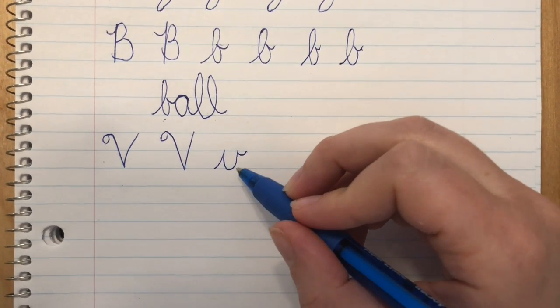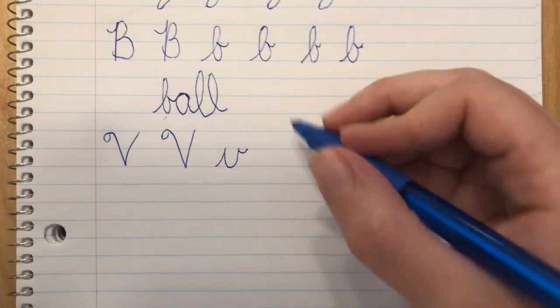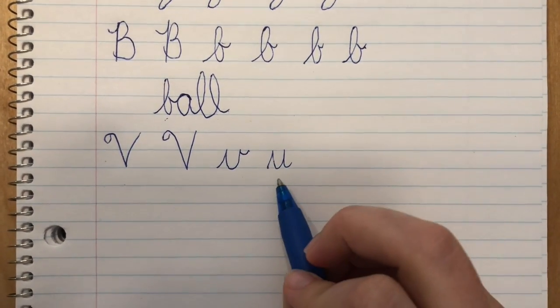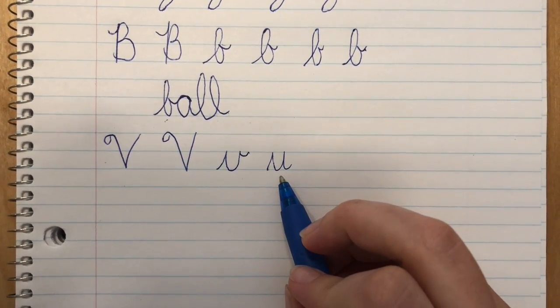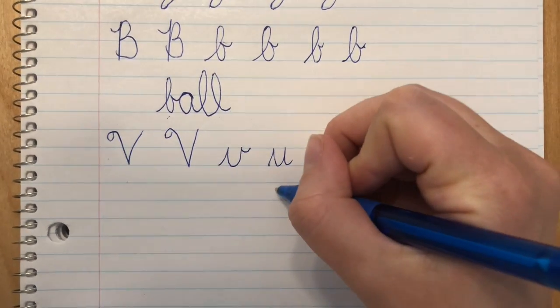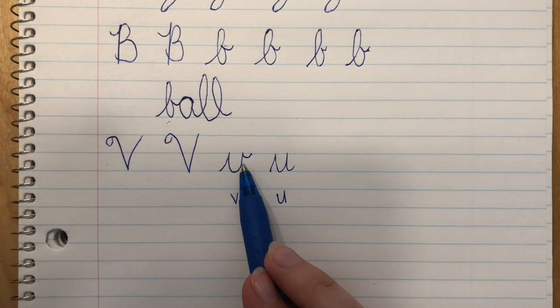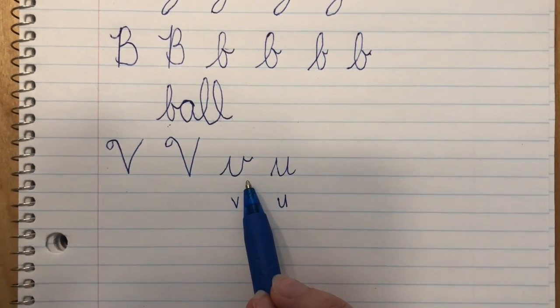It's really important that you end a v where it's supposed to, because if you don't and you keep going down again, what letter is that? Yeah, that's a u. This is a v. So where your letter ends tells me what letter it is.